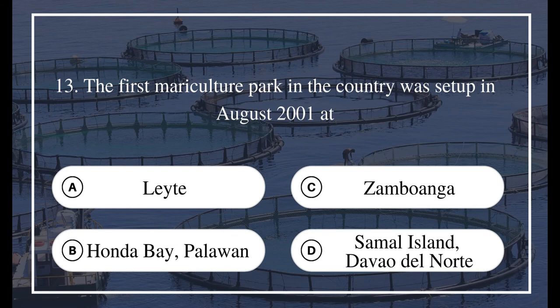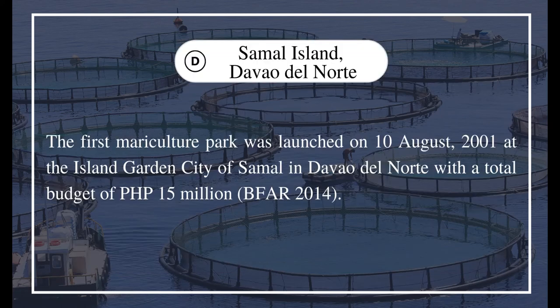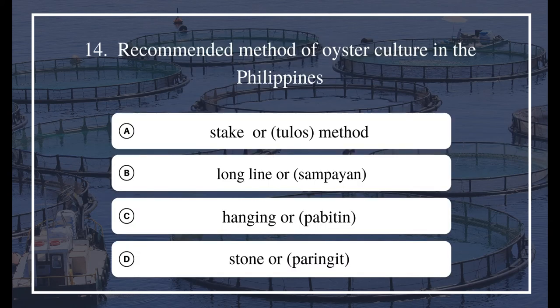Question 13: The first mariculture park in the country was set up in August 2001 at: a) Laggy, b) Honda Bay Palawan, c) Zamboanga, d) Samal Island, Davao del Norte. The answer is D, Samal Island, Davao del Norte. The first mariculture park was launched on August 10, 2001, at the Island Garden City of Samal in Davao del Norte, with a total budget of PHP 15 million (BFAR 2014).